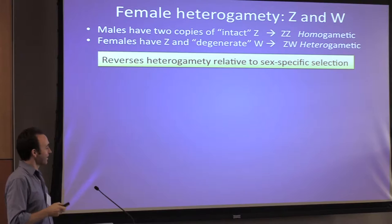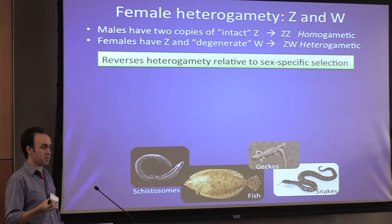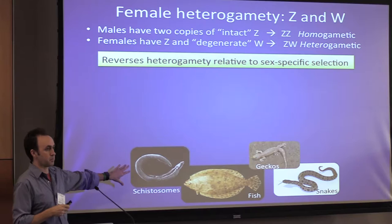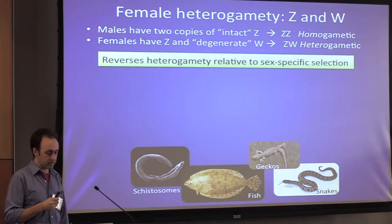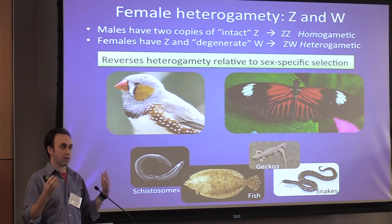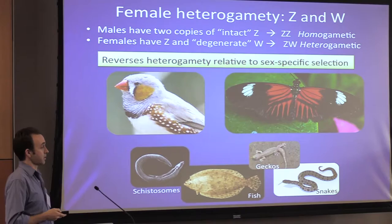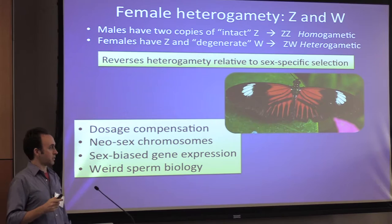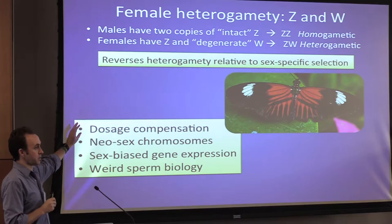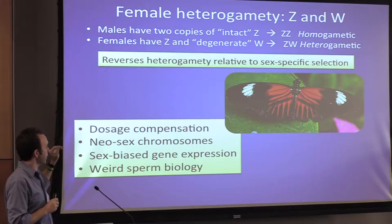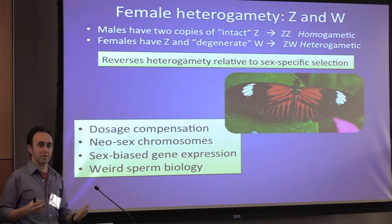With female heterogametic taxa, we can reverse the relationship between sex-specific selection and heterogamety. There are relatively undescribed examples in fish, squamates, and some parasites with ZW sex determination. Most prominent are birds and Lepidoptera — moths and butterflies. I focus on moths and butterflies, though there's parallel work in birds with interesting contrasts. Today I'll cover dosage compensation, what we can learn from neosex chromosomes in moths and butterflies, patterns of sex-biased expression, and finally some weird sperm biology — still genomics of sex, but not sex chromosomes.